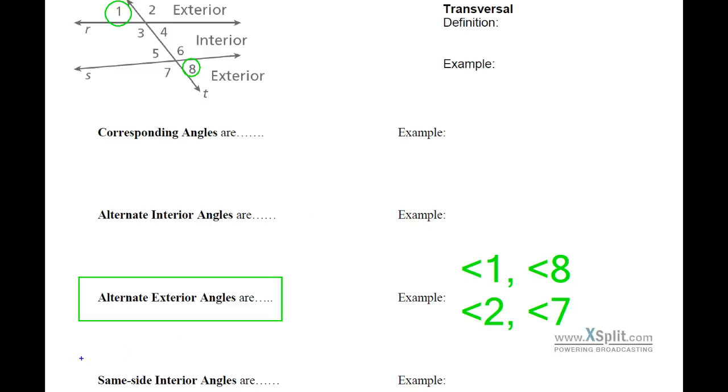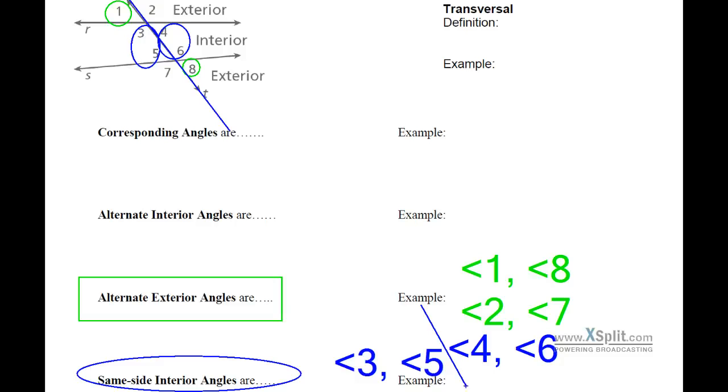Very last type that we're going to look at, same side interior angles. That's going to be like four and six are same side interiors, or three and five are same side interiors. They're on the same side of the transversal. Transversal, again, is this line T. They're on the same side of the transversal, and they're in the interior. So I'd say four and six, or I could say angle three, angle five are same side interior angles.